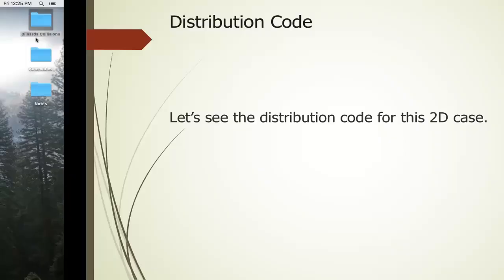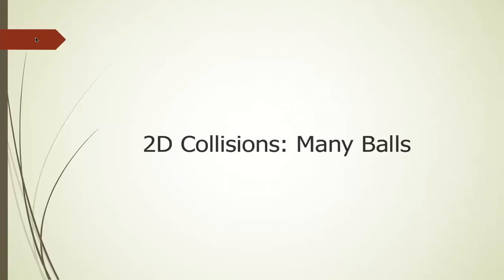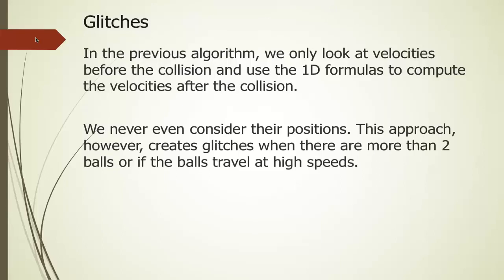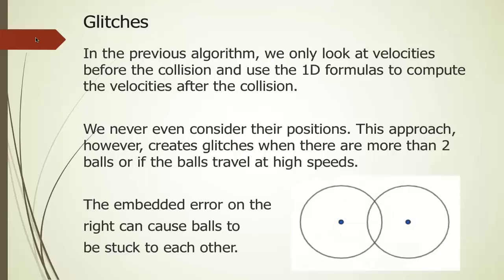There's a little bit of a problem when extending this to many balls. The algorithm only looks at velocities — we resolve the velocities, make the balls move at the new velocity, and everything seems correct. We never even considered the positions of the balls. However, this approach creates glitches when there are more than two balls or balls are going at high speed, because when balls bounce they actually overlap slightly first, and when you change direction and move them apart, this can cause balls to get stuck to each other.